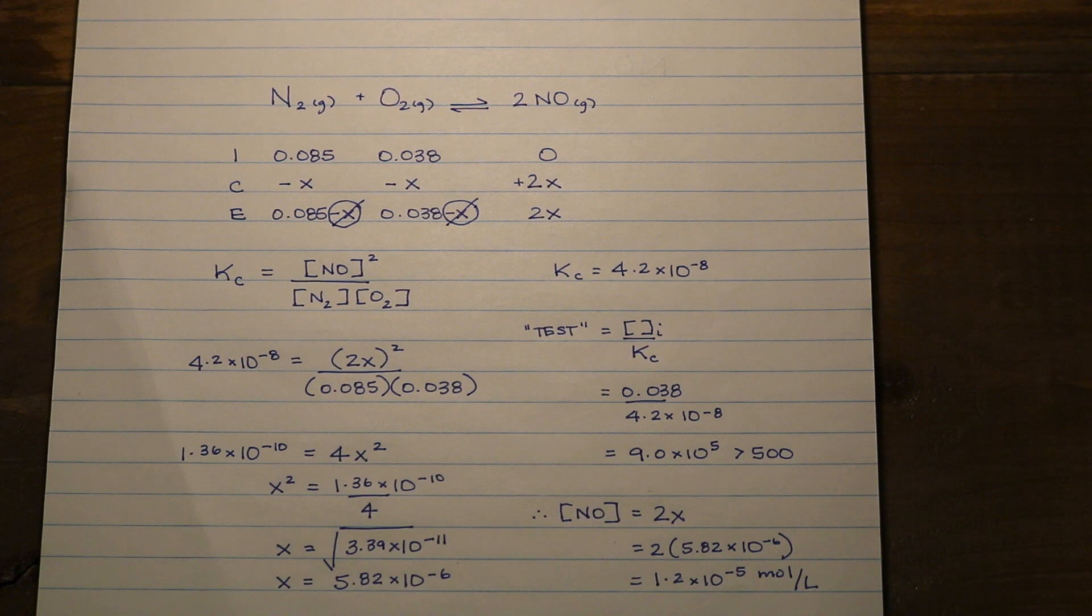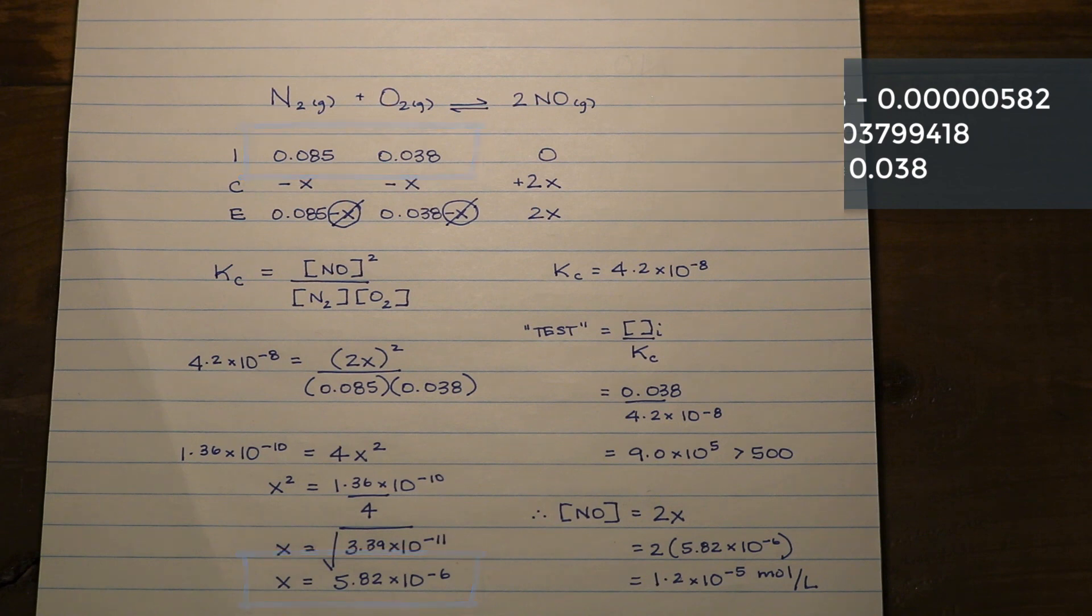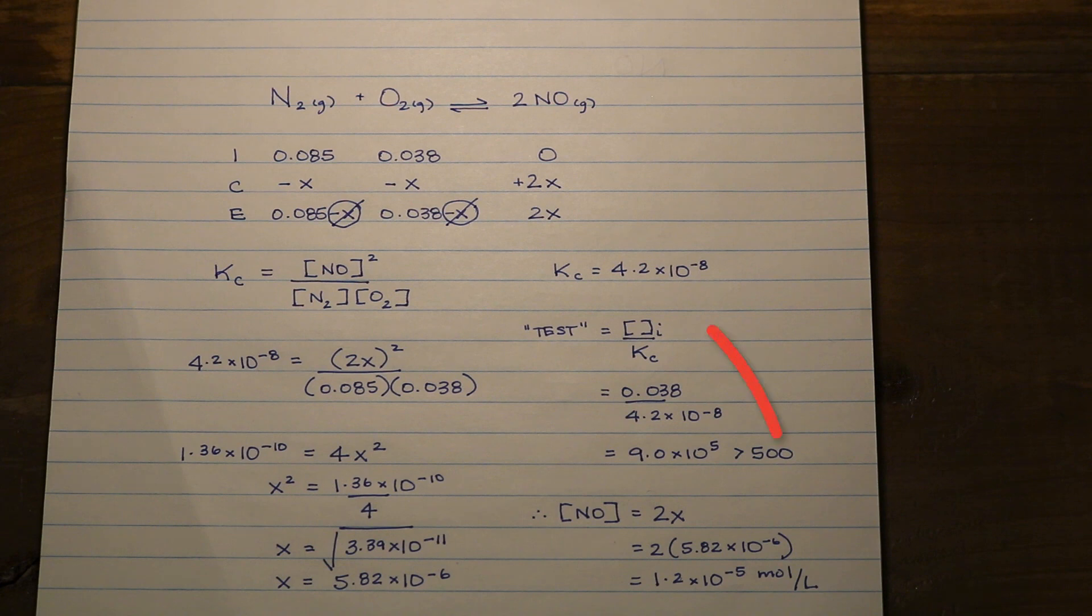If we take a look at why we could subtract X, notice how much smaller our X value is than our initial concentrations. We're talking about initial concentrations that are times 10 to the negative 2, whereas our X value is times 10 to the negative 6. Even if we were to subtract X from our initial concentrations, due to precision rules, our initial concentrations would effectively remain as they are at equilibrium. Our test was valid. Hopefully this video gave you a better sense of how to use ICE tables and the approximation method. Thanks for watching.